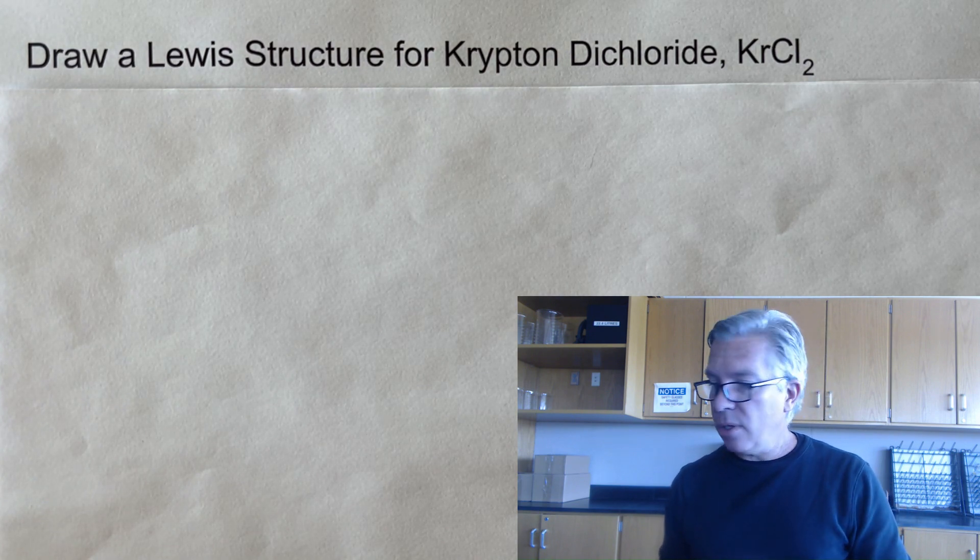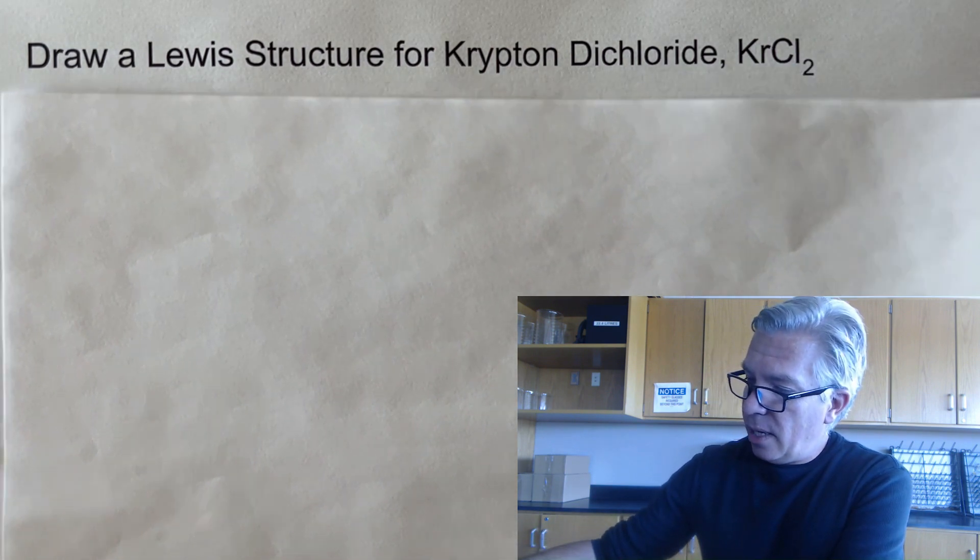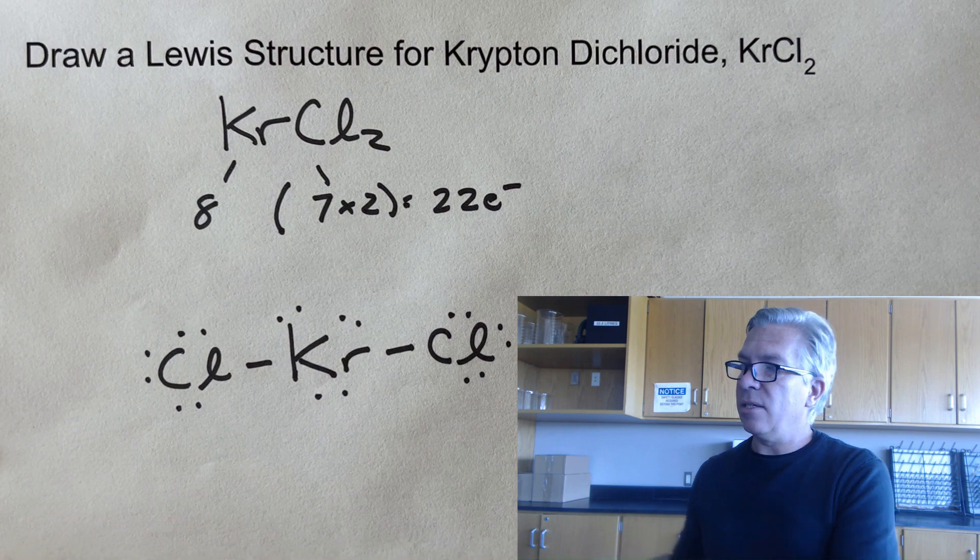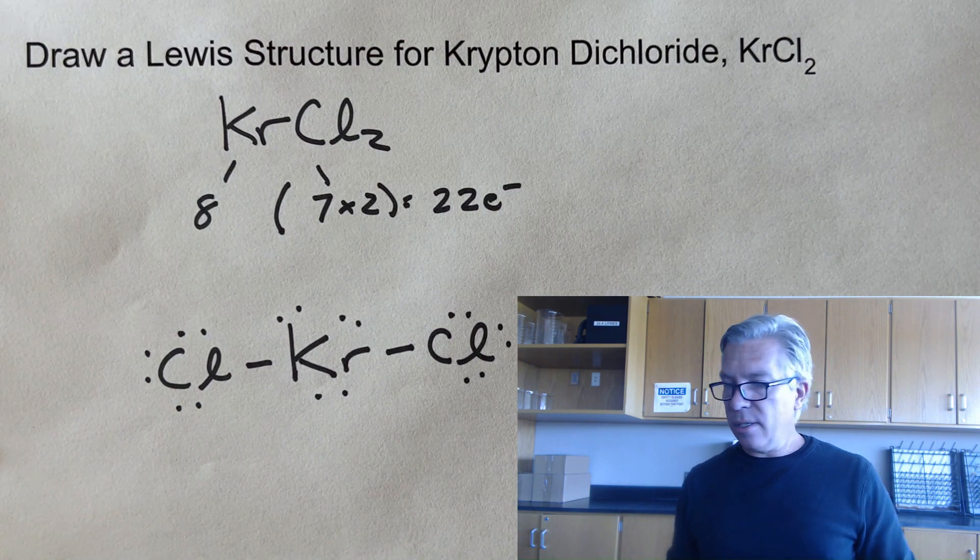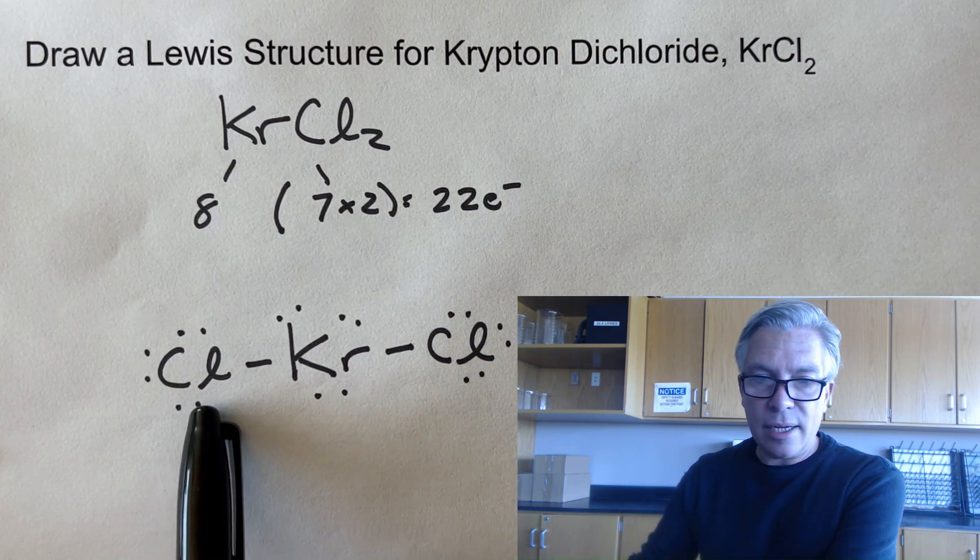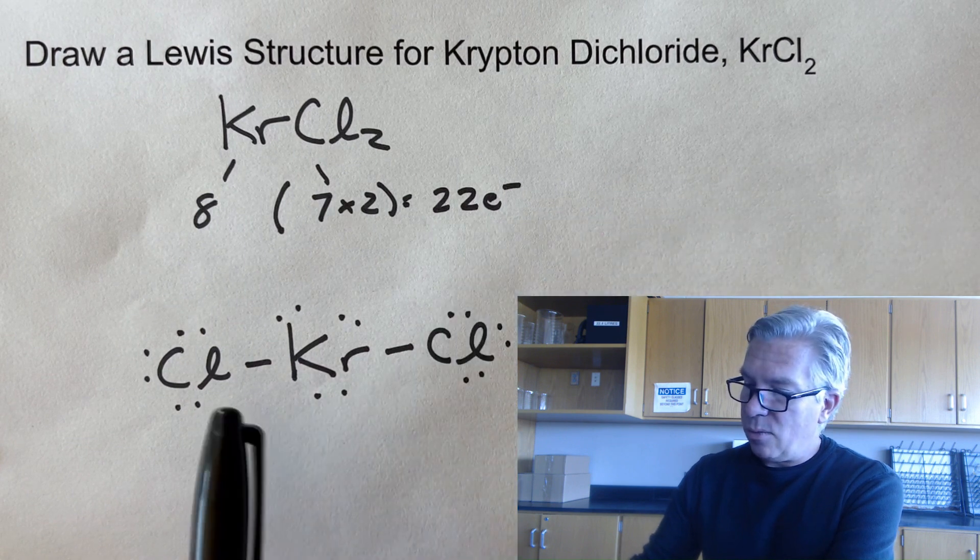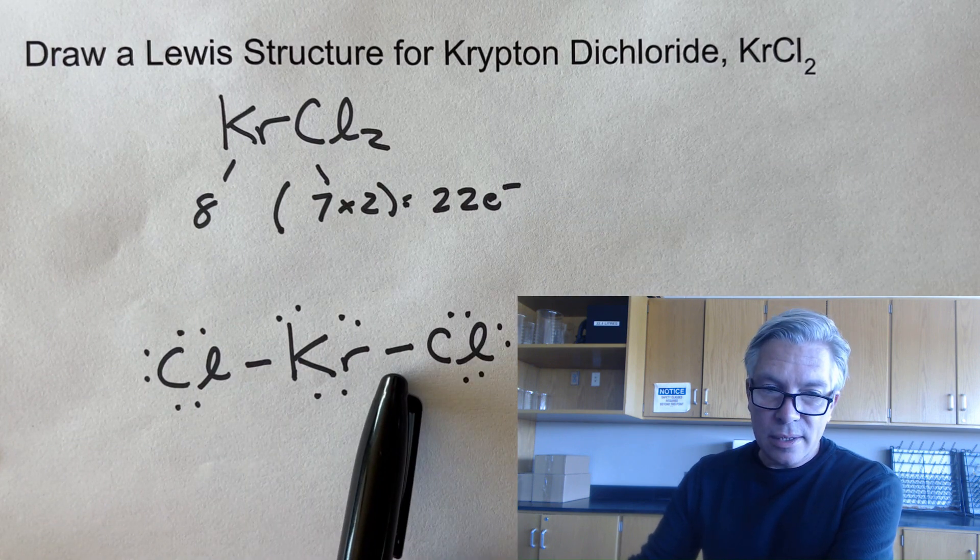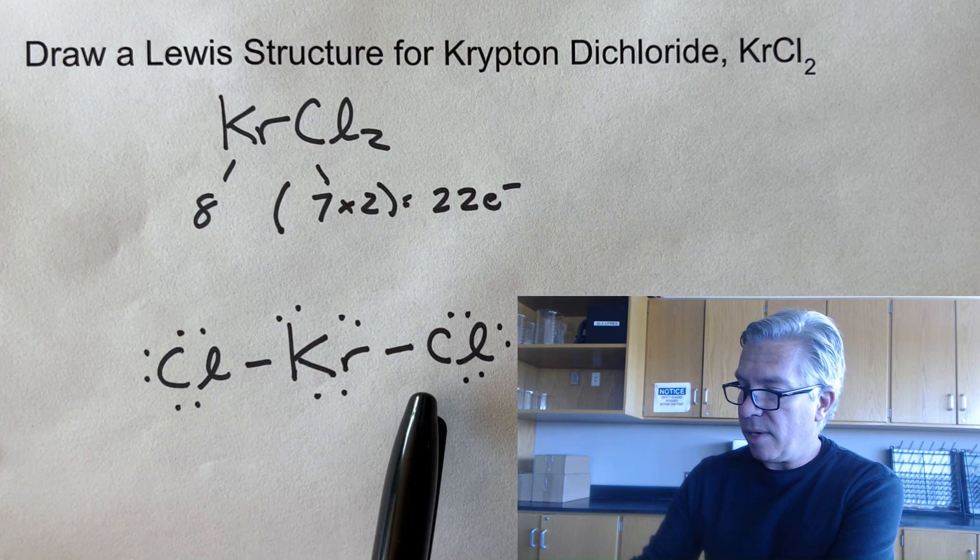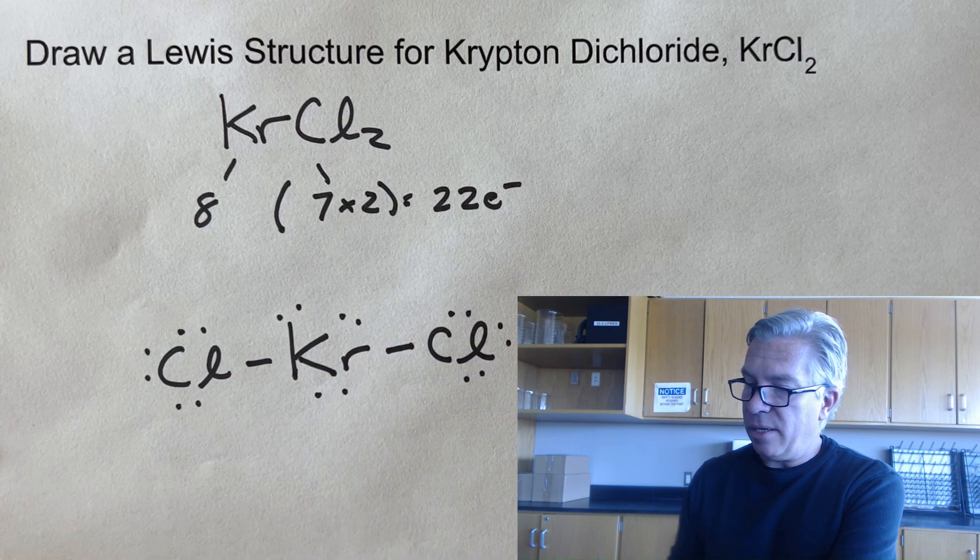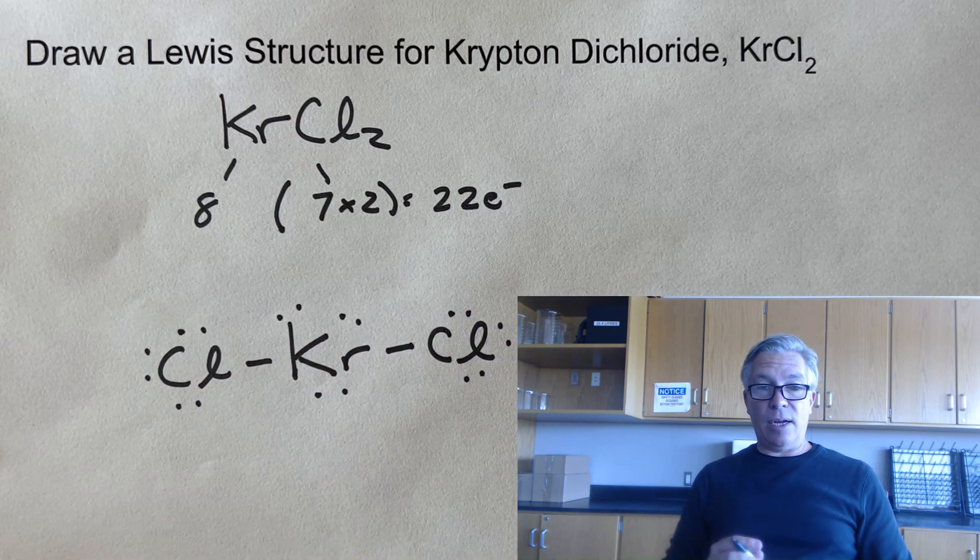Okay. So if you drew it, and it looks something like this, congratulations on drawing a good Lewis structure for krypton dichloride with 22 electrons. We need the two bonds, no double bonds, because we already had plenty of electrons to go around. But we ended up with three lone pairs on the central atom.